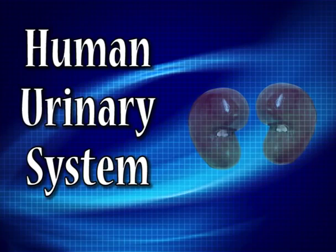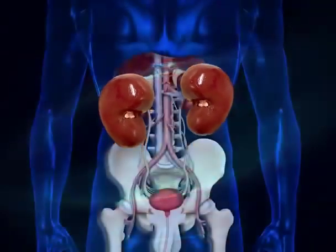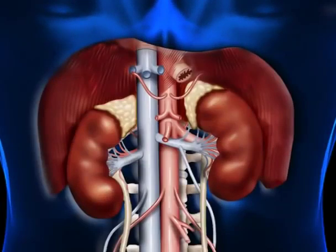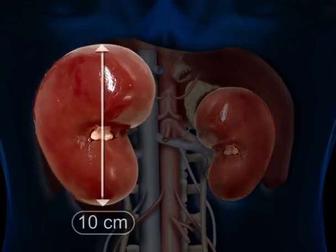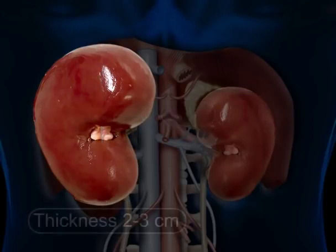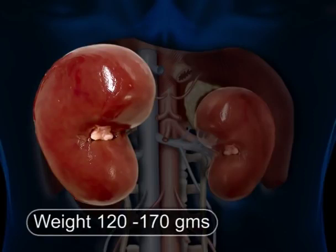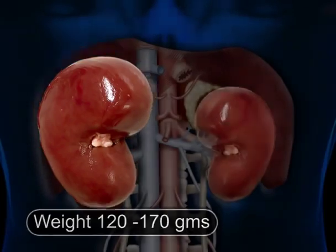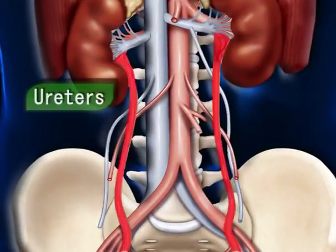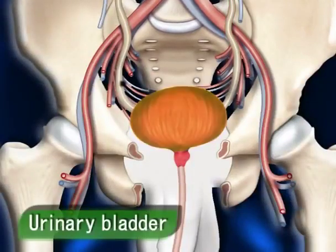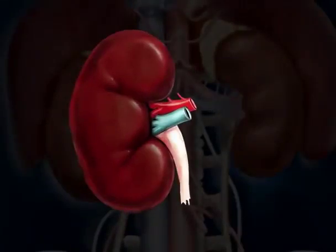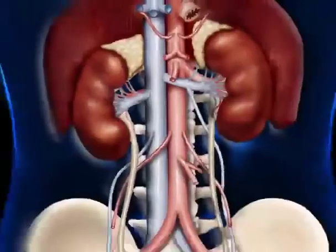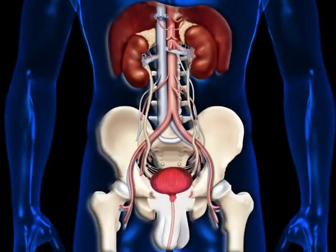The human urinary system: the kidneys are a pair of bean-shaped organs that are part of the urinary system. The kidneys are dark red, slightly flattened, bean-shaped organs, each about 10 centimeters long, 5 centimeters wide, and 2 to 3 centimeters thick, with an average weight of 120 to 170 grams. The other components of this system are the ureters, urinary bladder, and the urethra. One of the main jobs of the kidney is to filter waste out of the blood. The urinary system regulates the quantity and composition of fluids by removing metabolic wastes from our body.